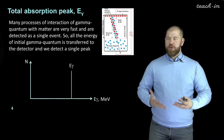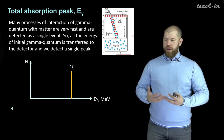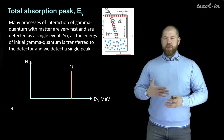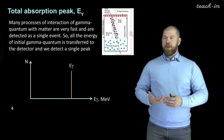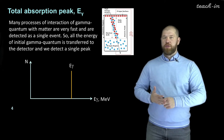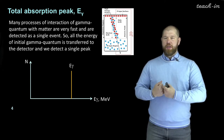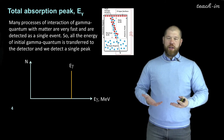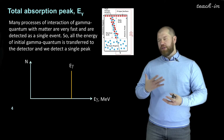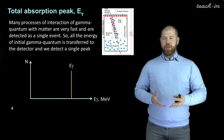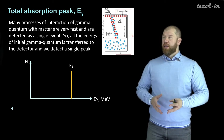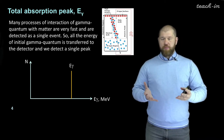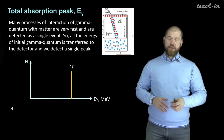So first of all, the total absorption peak. As we remember, when gamma quanta interact with matter, there are several processes that can occur. There is the photoelectric interaction, where all the energy of the gamma quanta is absorbed by the electron and it is released from the atom or molecule. Then there can be Compton scattering, where part of the energy is transferred to the electron and part is scattered as another gamma quantum. And there is formation of electron-positron pairs. All these processes are quite fast — it takes about 10 to the minus 12 seconds.